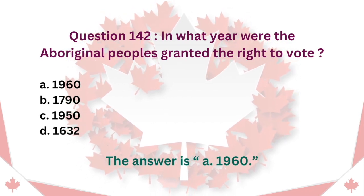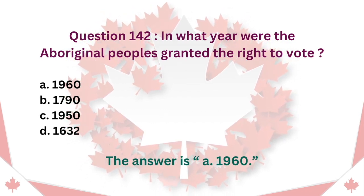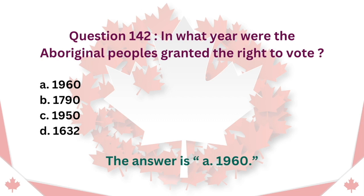Question 142: In what year were the Aboriginal peoples granted the right to vote? A. 1960. B. 1790. C. 1950. D. 1632. The answer is A. 1960.